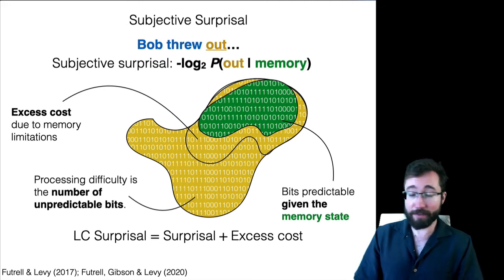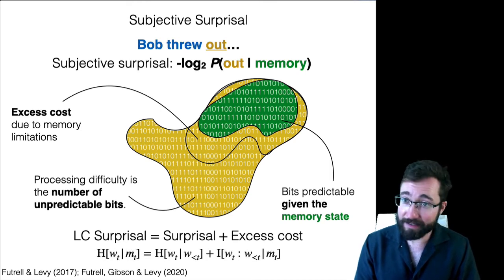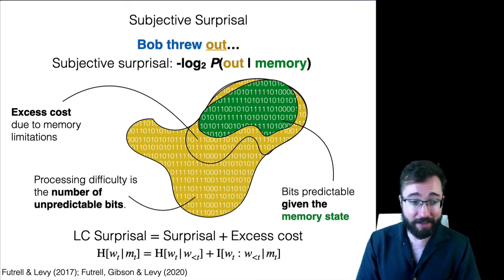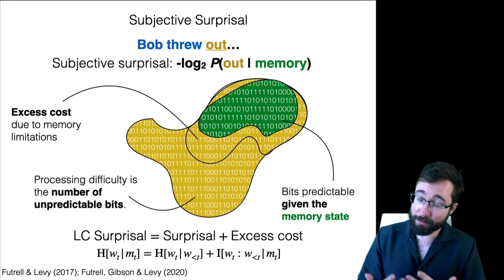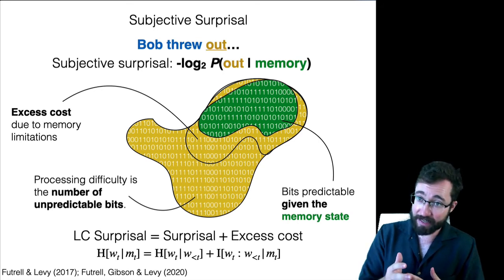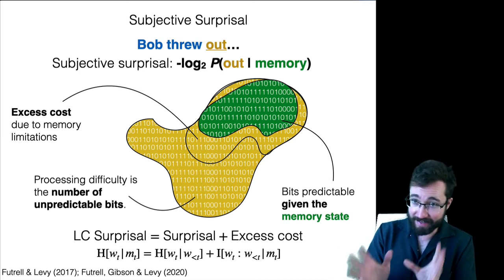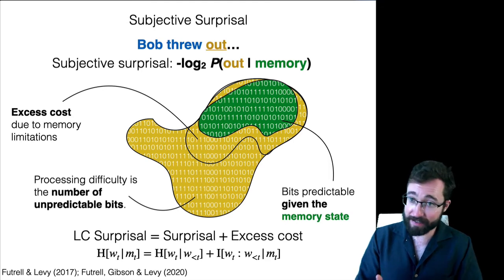You can convert this into very real terms in information theory. The average surprisal of a word given a memory representation is just the entropy of the word given the context, plus an excess cost which comes out to be a mutual information term — the mutual information of the word and the context conditional on the memory. Here h is entropy, which is average surprisal.